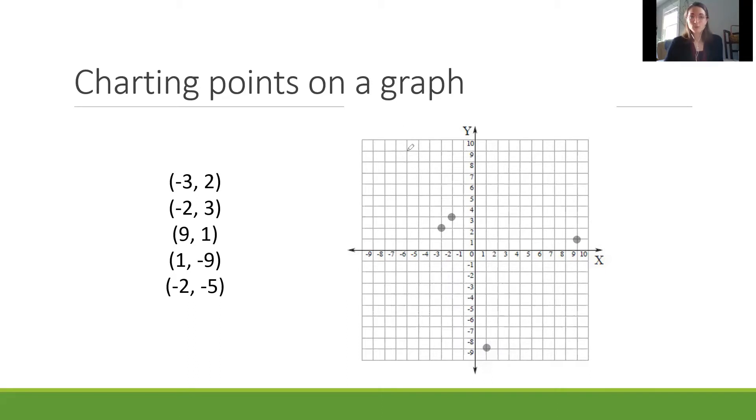For our last one, negative two, negative five: start at zero, go over to negative two, and follow the x-axis down to negative five—that's our spot. This is how we take points written in that x, y format in parentheses and place them on a chart. In more advanced work we might be asked to find the slope or differences between points, or look for trends, but for today this is an overview of how to use a graph.